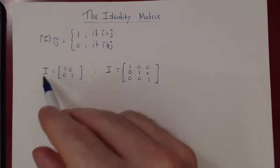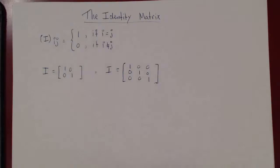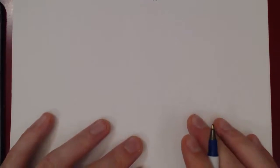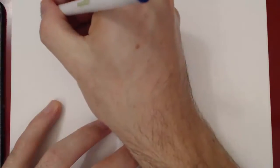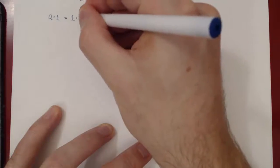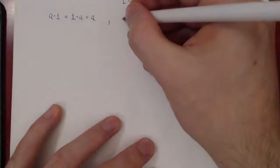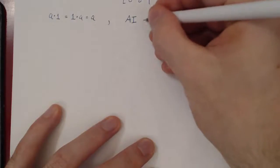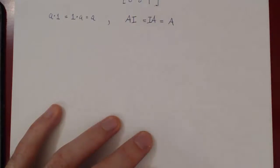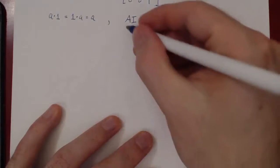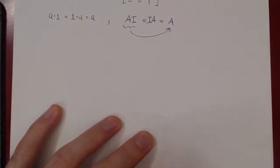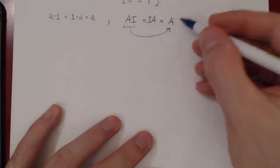What we want to prove is that this matrix behaves like the real number 1. The real number 1 has the property that a times 1, or 1 times a, equals a. We want to prove that I has the same property: if A is a square matrix and you compute A times I, where I is of the same size as A, you get back A. Similarly, I times A also equals A.